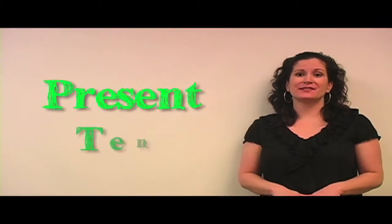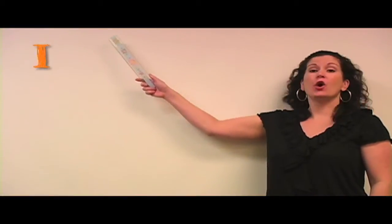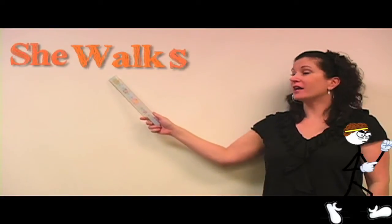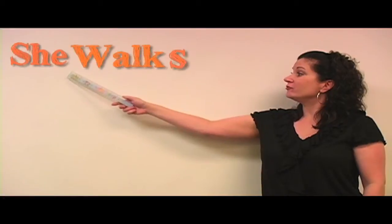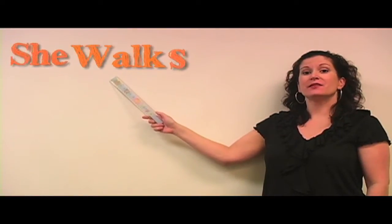Let's talk about a verb in the present tense happening right now. I walk. She walks. You'll notice I added an S. When you use she, your verb has an S in the present tense.